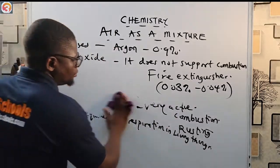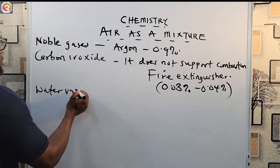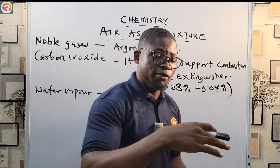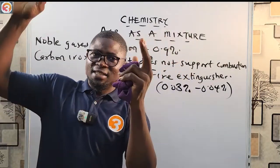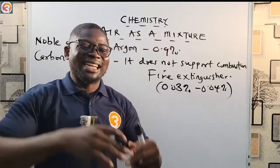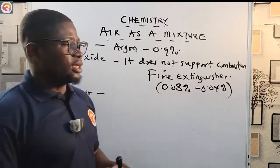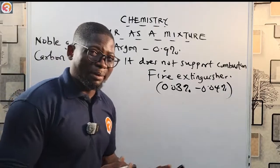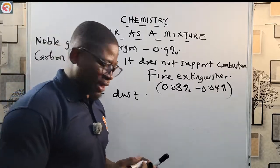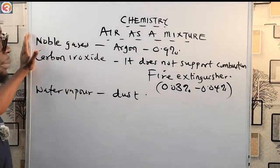The last major component we look at is water vapor. During summer, water from oceans and rivers evaporates and escapes into the air. So water vapor is also a component of air. There are also some other particles like dust that are components of air, but they are present in very, very minute quantities. So these are the components of air we have looked at.